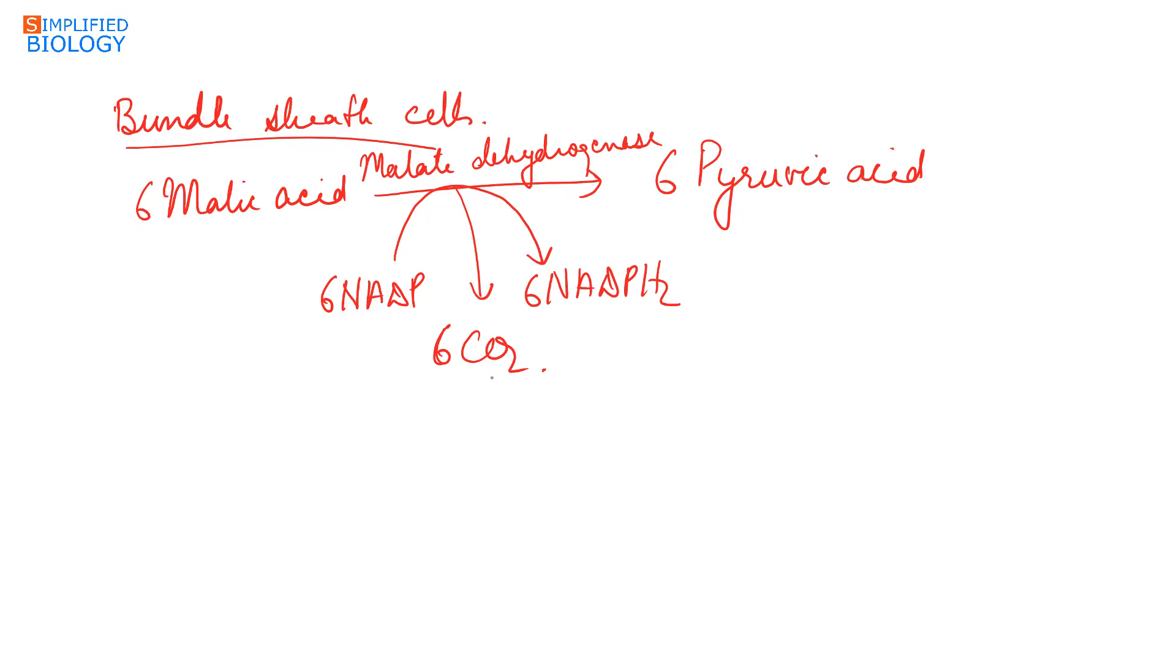Now the carbon dioxide that is released enters the Calvin cycle where sugar is formed. So ultimately, sugar is always formed inside the Calvin cycle. The pyruvic acid produced is transferred back to the mesophyll cells for regeneration.